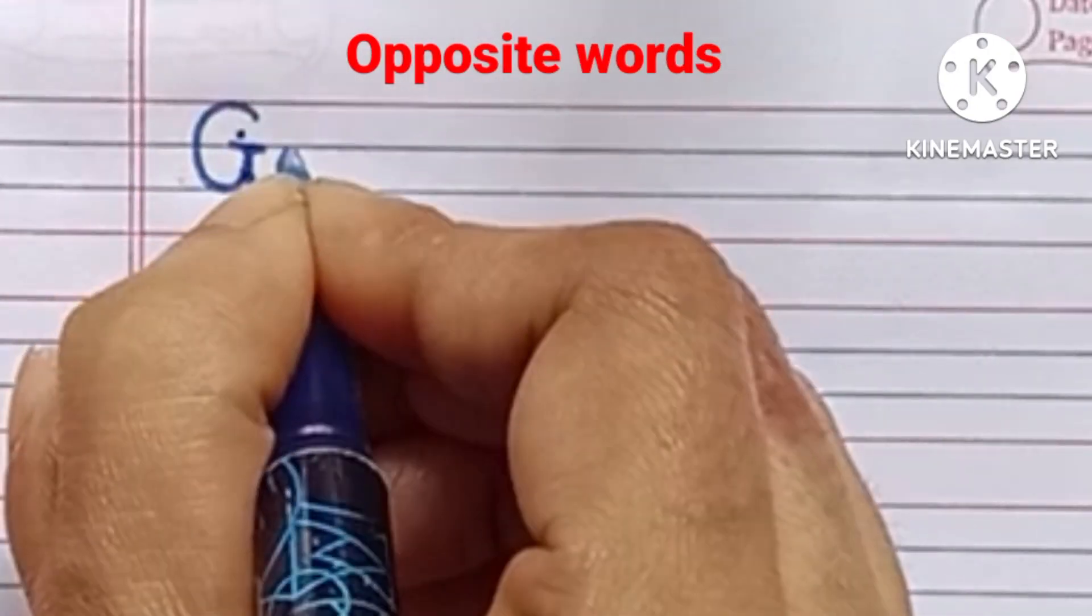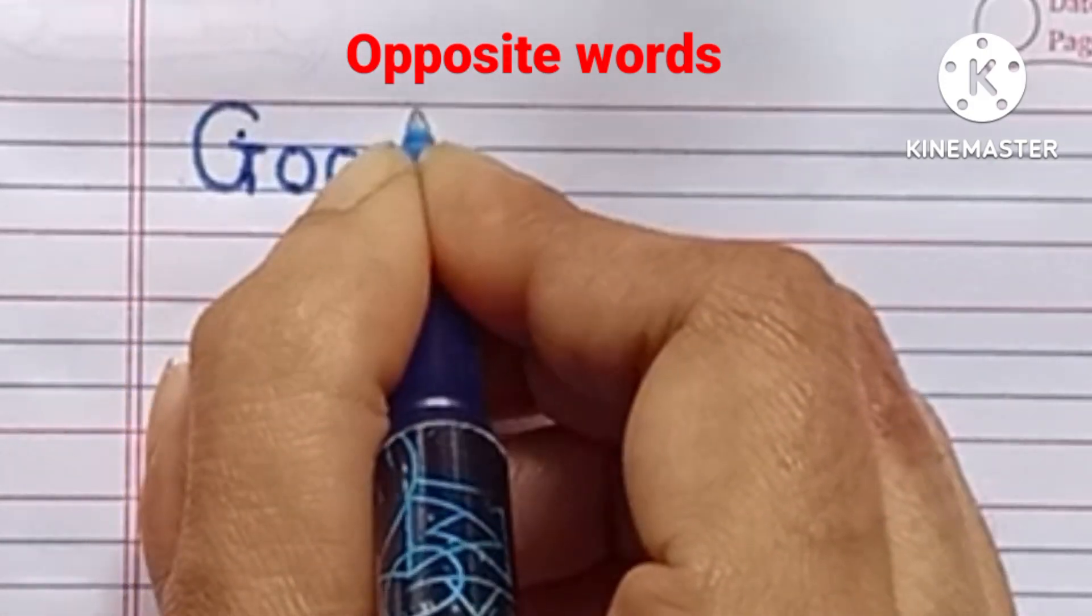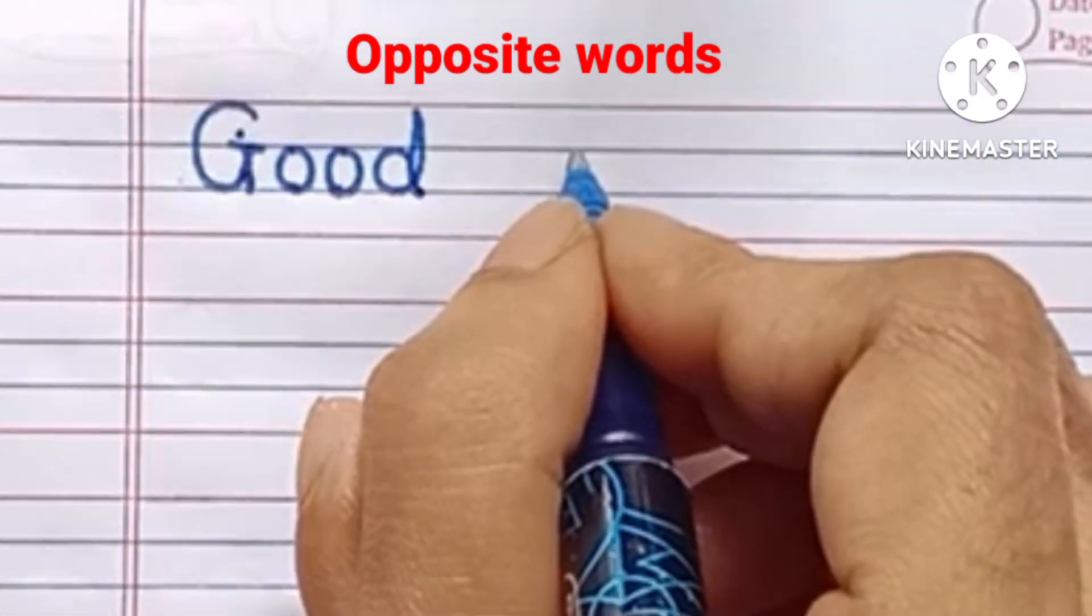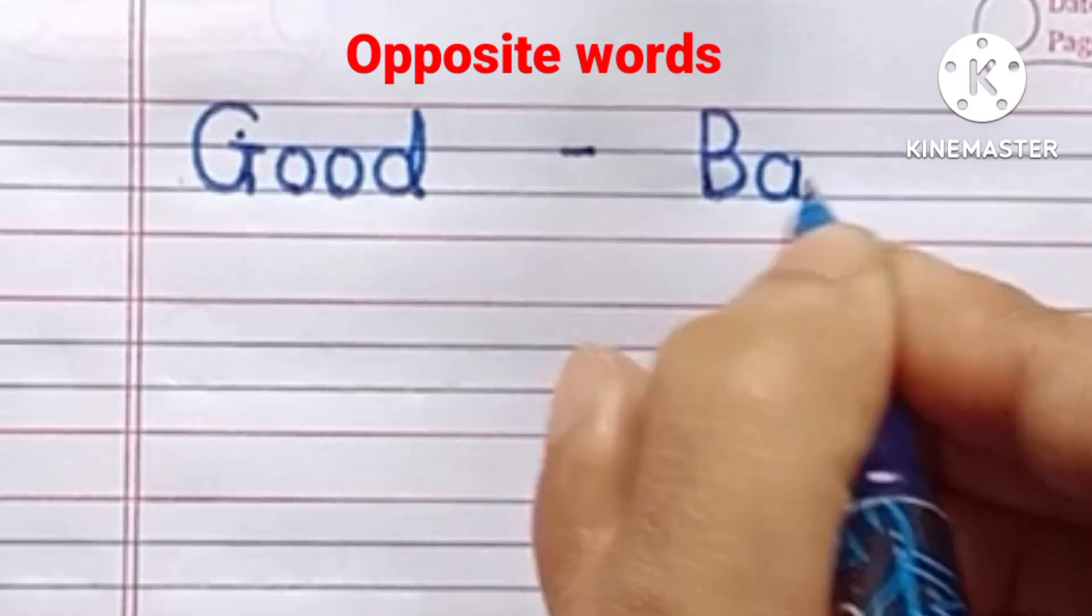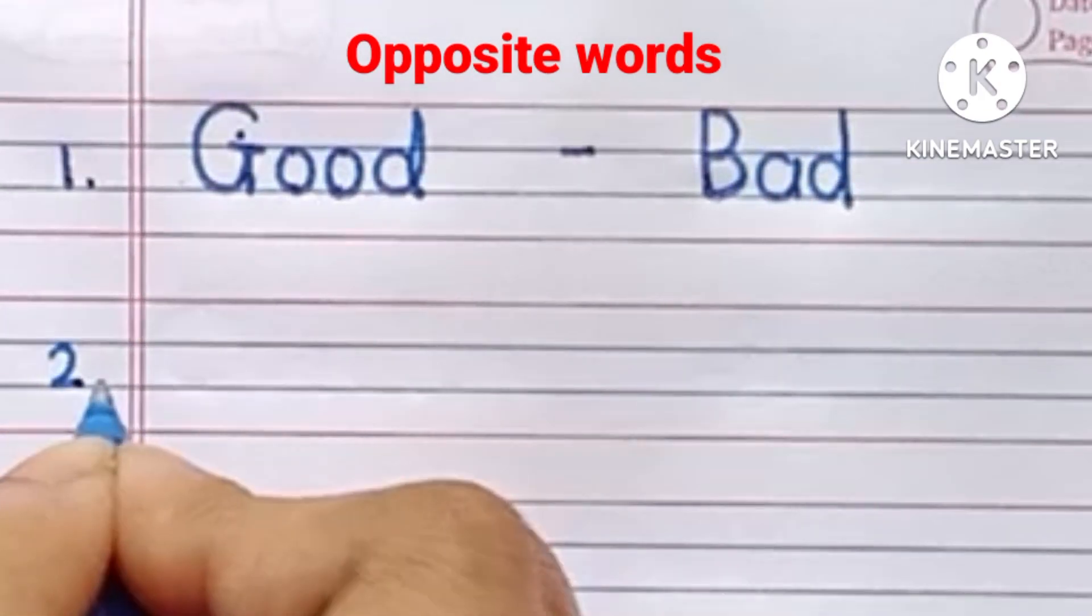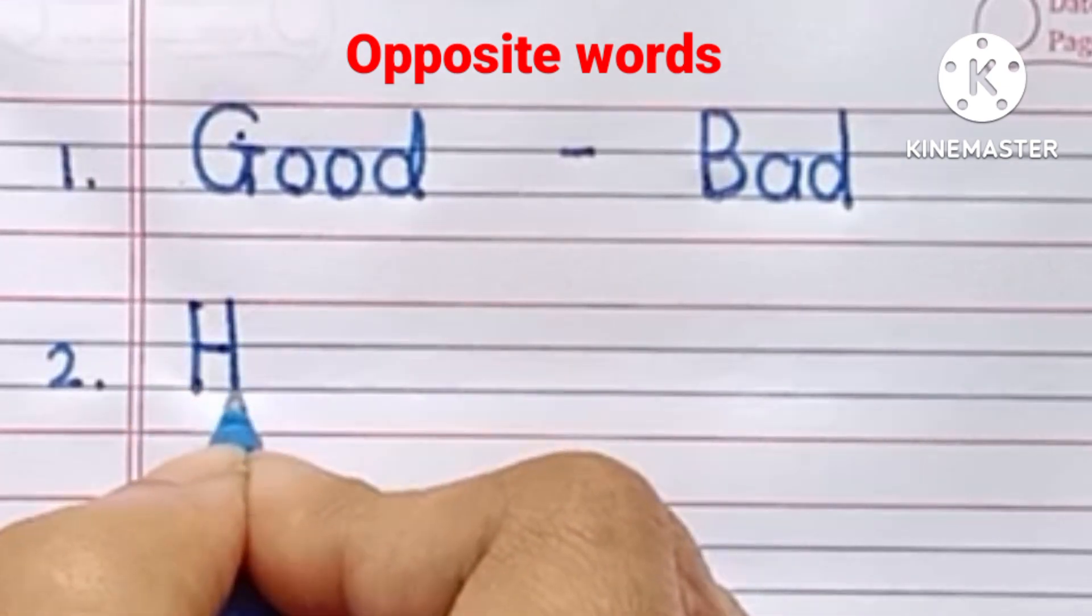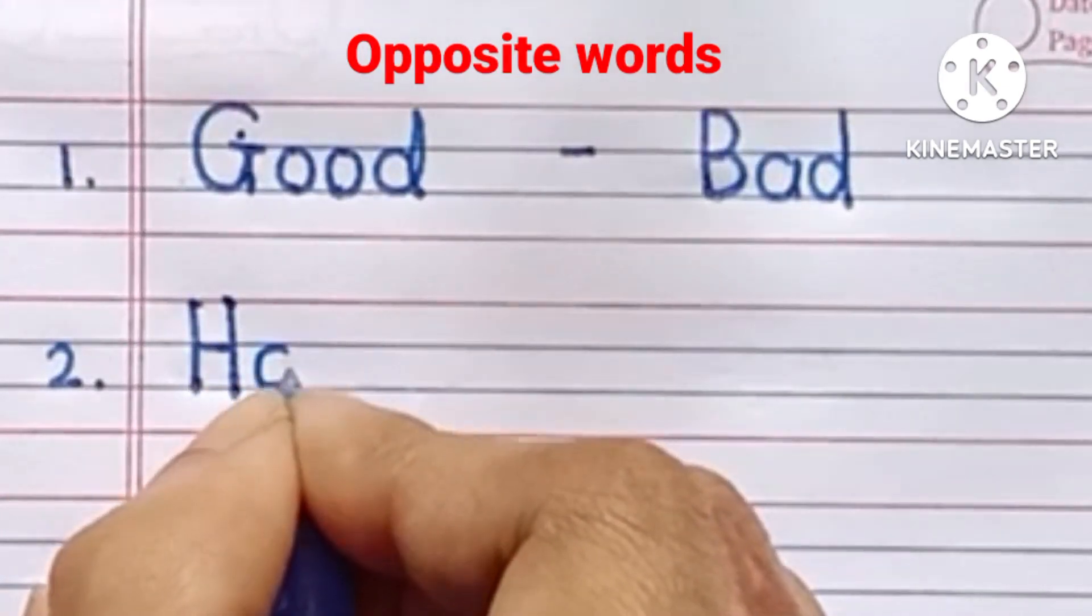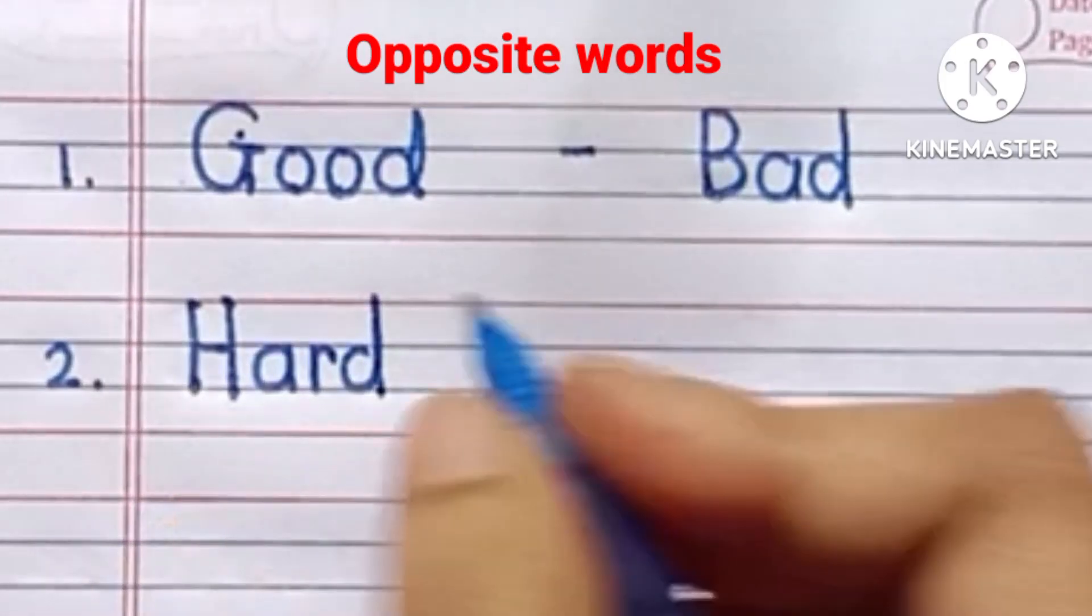G-O-O-D, Good. B-A-D, Bad. Second, H-A-R-D, Hard.